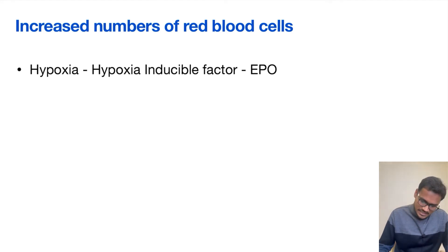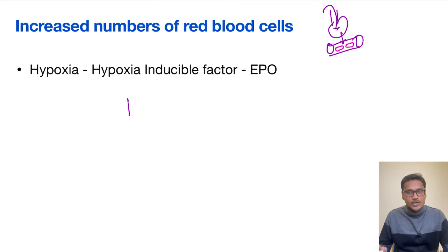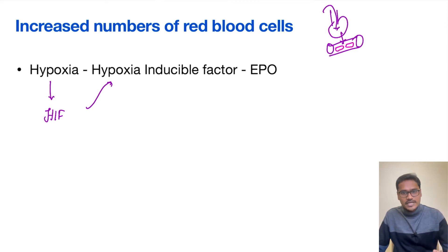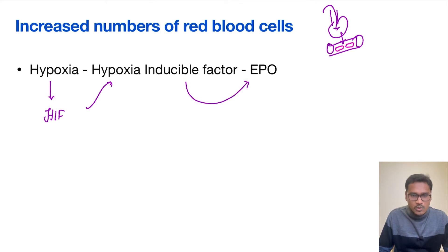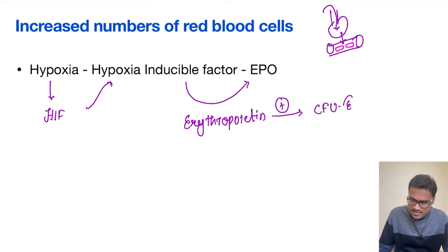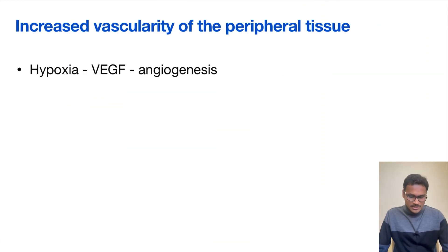The third change is an increase in red blood cell count. More red blood cells carry more oxygen. This happens through hypoxia producing a factor called HIF — Hypoxia Inducible Factor — produced from the kidney, which stimulates EPO (erythropoietin). Erythropoietin stimulates the colony-forming unit erythroblast, the precursor form of RBCs, causing production of more and more RBCs. This is why we see polycythemia at high altitude.